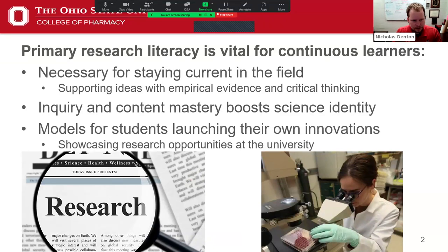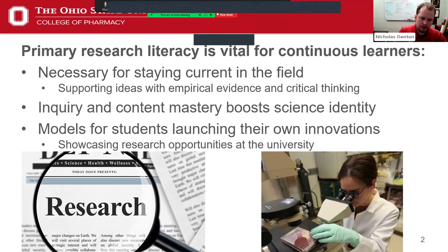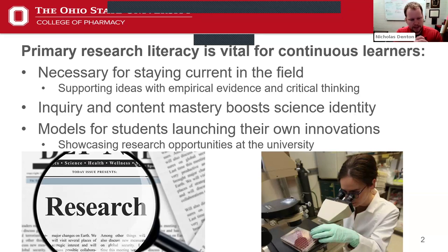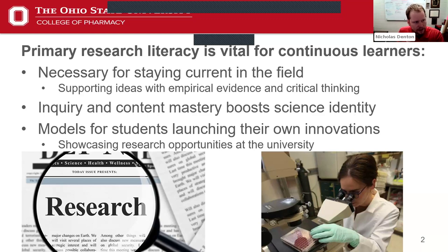As instructors, we can recognize that primary research literature is vital for becoming continuous learners. Once we reach the top level of our expertise, it's necessary for staying current in our field, whether in STEM or the social sciences, and also for students interested in getting involved in research or turning observations from their practice into actionable investigations. This can also provide insight into how students can take methods from the primary research literature and apply them to their own investigations.